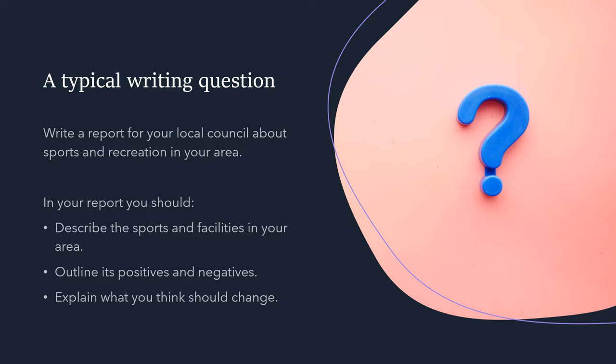This is a typical writing question: write a report for your local council about sports and recreation in your area. First, it tells you the text type you need to write, so always get into the habit of underlining that - so write a report. Then it's important to know who you're writing for, because that tells you if it's formal or informal and also what it's about. They give you three bullet points as hints: describe the sports and facilities in your area, outline its positives and negatives, and explain what you think should change. You should structure your response to tick off these three areas - an introduction, conclusion, and three solid paragraphs based upon them.